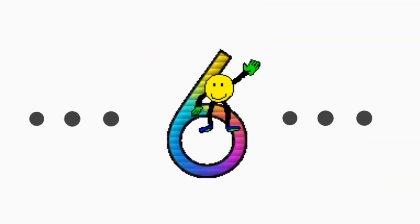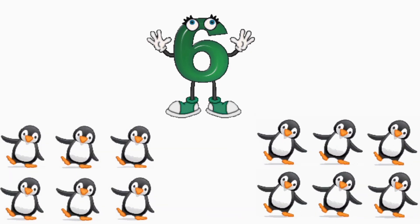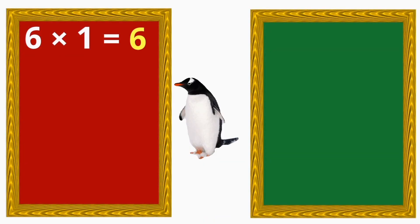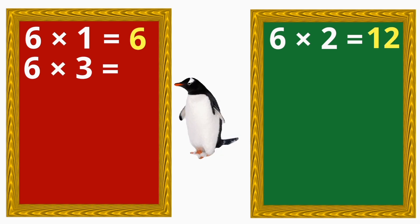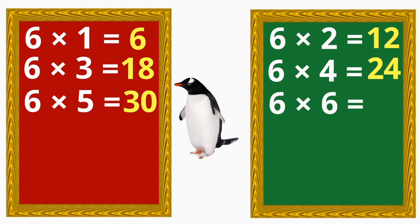Multiplication table of 6. Let's sing it one more time. 6 x 1 is 6, 6 x 2 is 12, 6 x 3 is 18, 6 x 4 is 24, 6 x 5 is 30, 6 x 6 is 36.